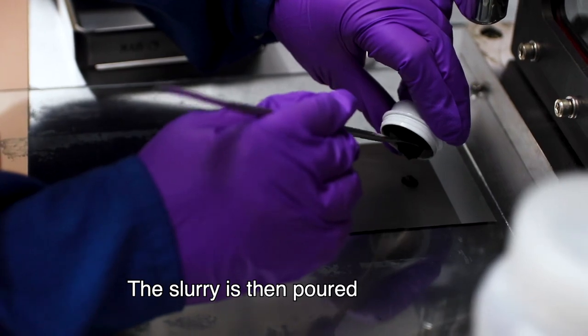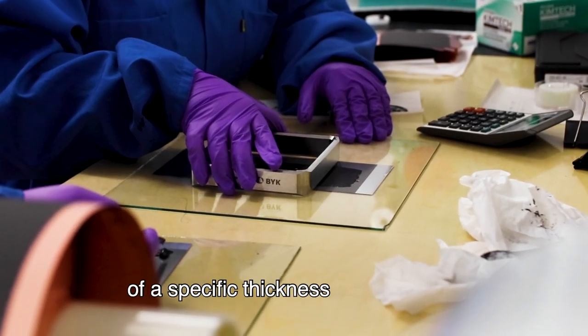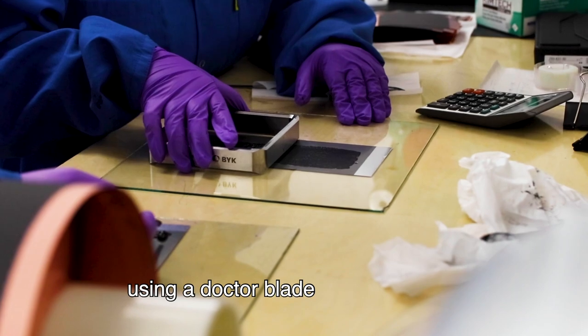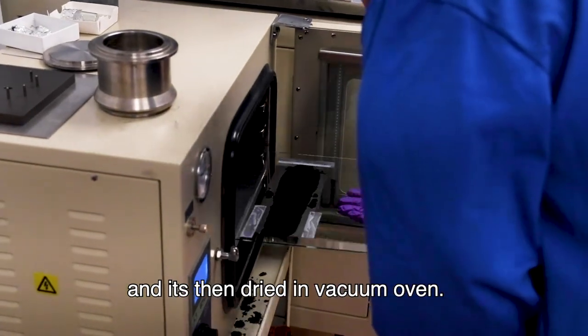The slurry is then poured into a current collector and cast into a thin film of a specific thickness using a doctor blade, and it's then dried in a vacuum oven.